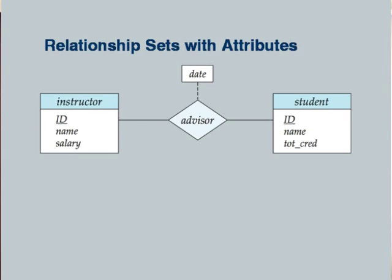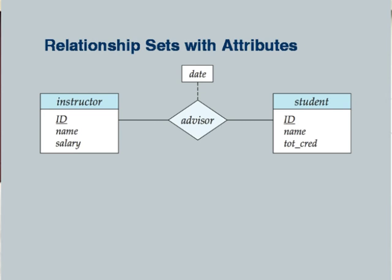For attributes of a relationship, earlier we used ovals linked to the diamond. In this UML convention, we use a dotted line to a box containing the attributes.